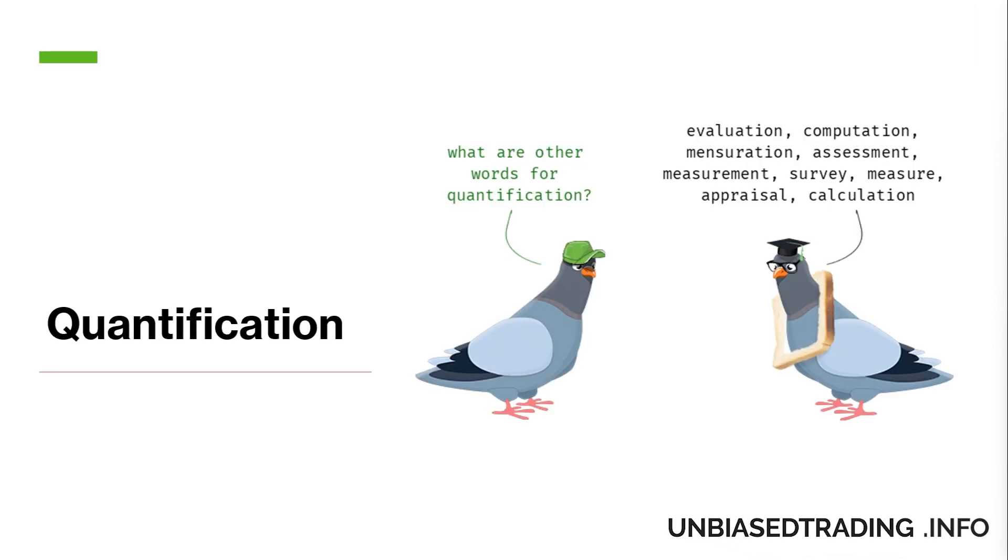Quantification is step two. Mere statements like I'll take an entry when it shows weakness over the pre-market high are not sufficient for actually successful backtesting. To ensure the viability of a strategy is crucial to develop a logical framework behind the idea. For example, a quantified version of the previous statement could be I would enter a trade if there is a three-minute red candle above the pre-market high after it first touches it.